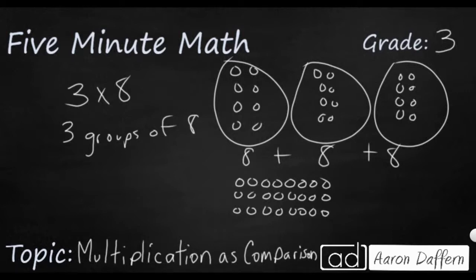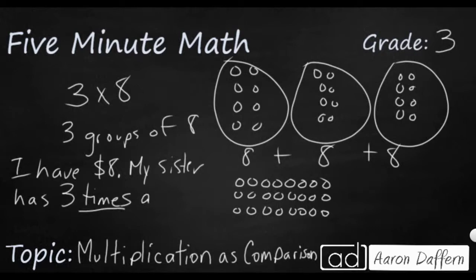And we could have a simple problem like this. We can say, I have $8. And then we could say, my sister has three times as much. And you see that word times in there. Three times as much as me.